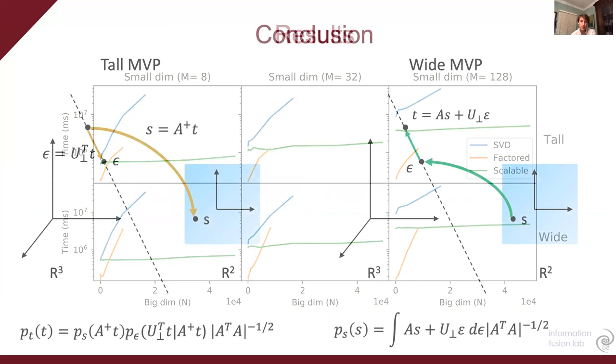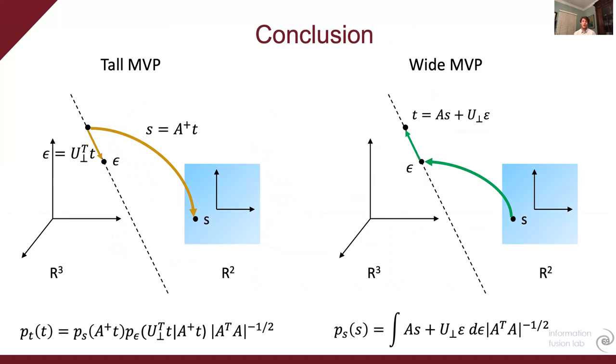So in conclusion, we showed how you can apply matrix vector products to normalizing flows and linked the tall MVP and wide MVP together through the stochastic inverse. And we also introduced a scalable algorithm that can let our approach scale to really high dimensions. Thanks for listening.